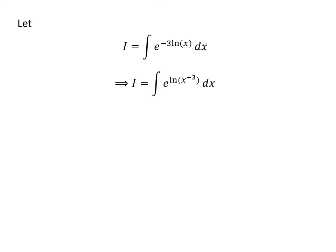As 3 times natural log of x is equal to natural log of x to the power minus 3, so I is equal to the integration of e to the power of natural log of x to the power minus 3 with respect to x.